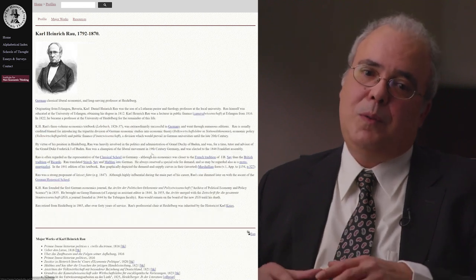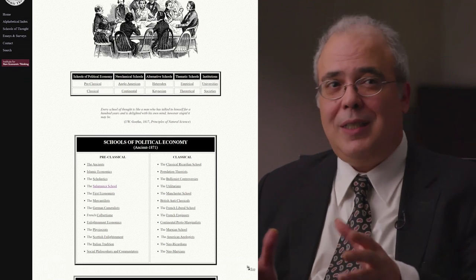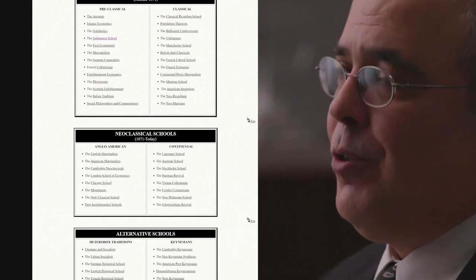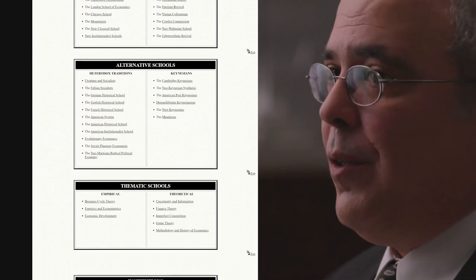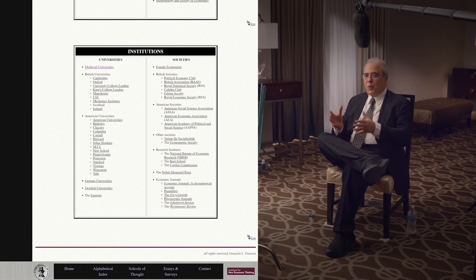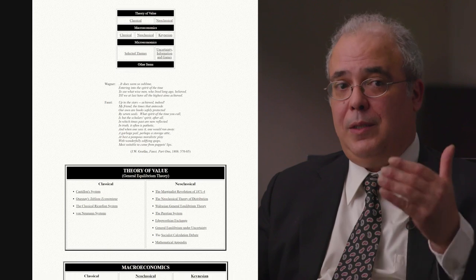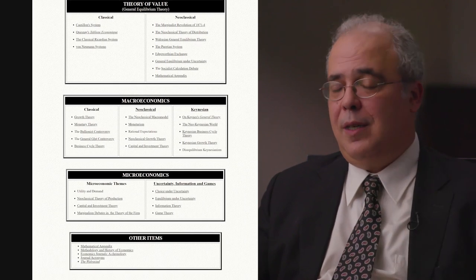There's another channel: you can go in through the schools of thought, where economists are organized. It's not very strictly defined — some are well-known, like the Austrian school or the Chicago school, but others are more conveniently constructed just for the website. It's a way to see how economists relate to each other. And then there's a series of essays and surveys on particular topics where you can see the history of a topic or a field. It makes it easy to move between profiles, topics, and schools, giving you a rich sense of how economists have been related to each other over time.